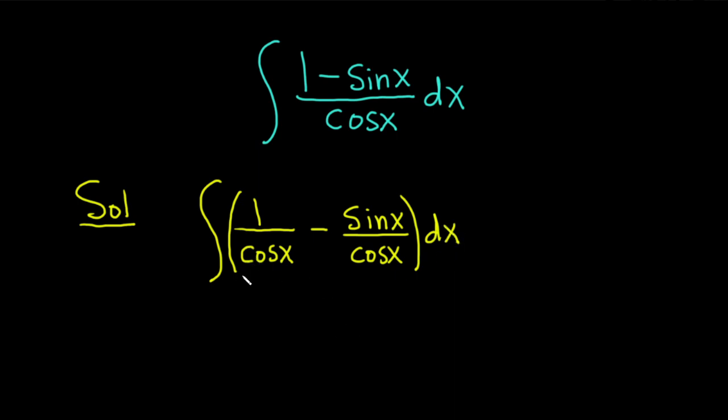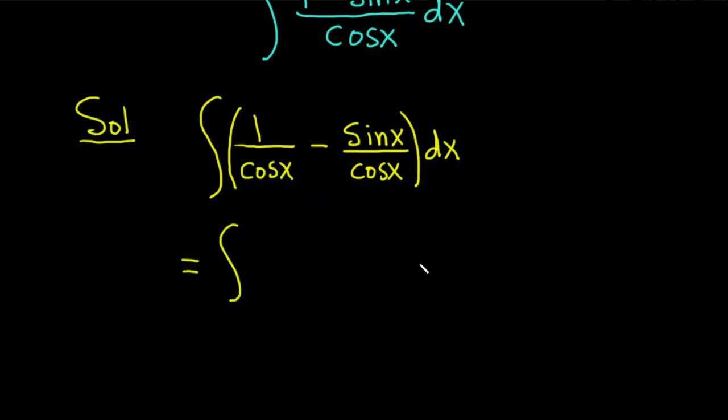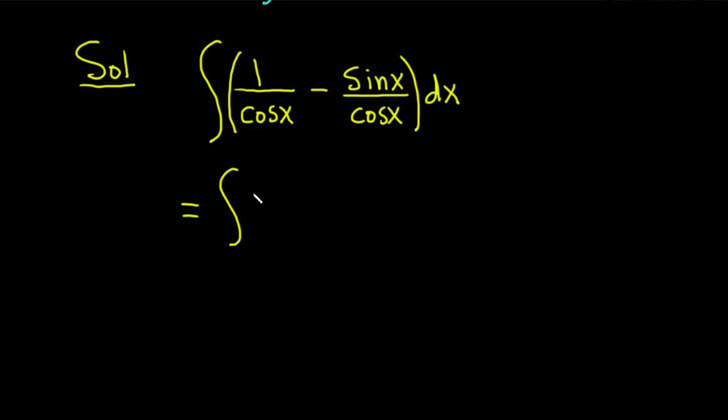So now we can use some really basic trig identities. So this is equal to the integral of, so 1 over cosine is the secant function. We have secant x minus, and then sine x over cosine x is tangent x.